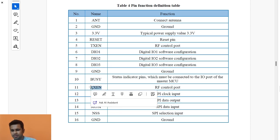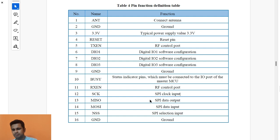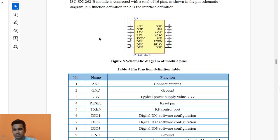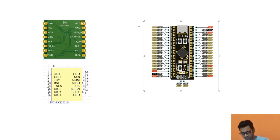We are not using the RX enable pin. For SPI connection we use four types of pins: clock, data in, data out, and chip select. Here we have MISO, MOSI, NSS, and SCK — these are the SPI-related pins. It's clear which pins we are going to use in our project.